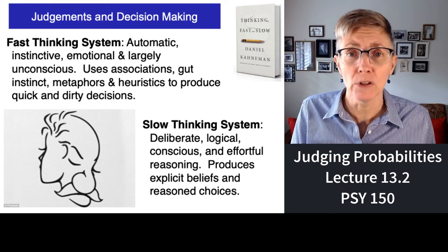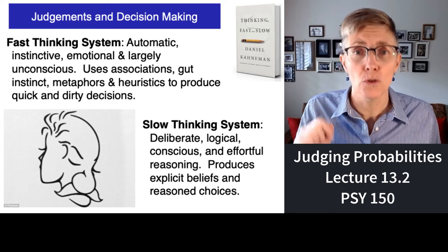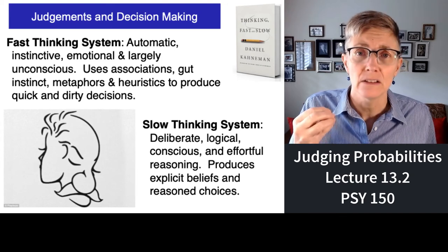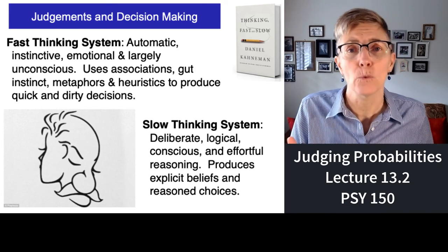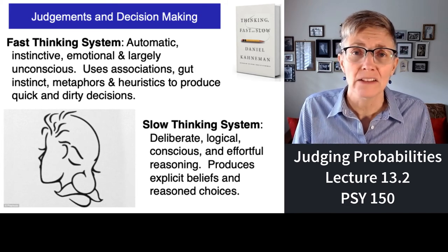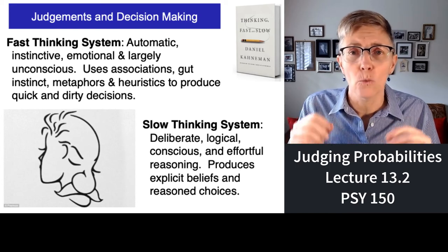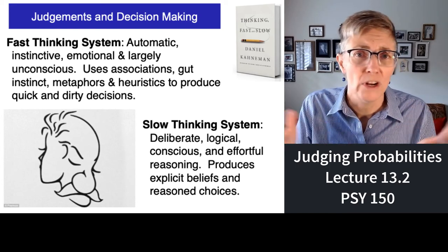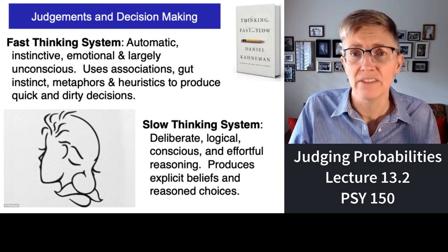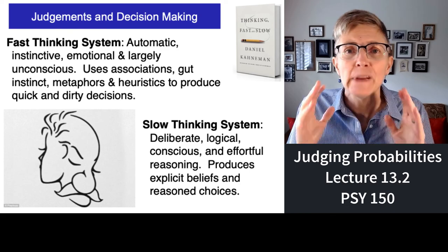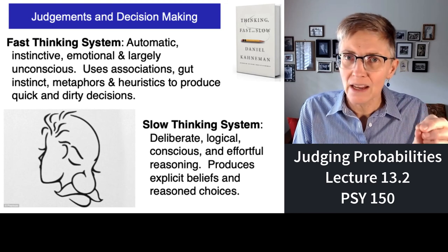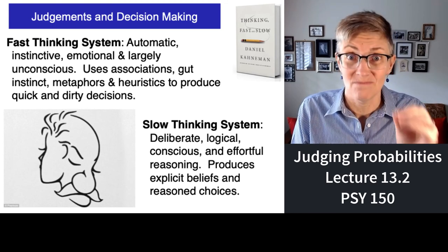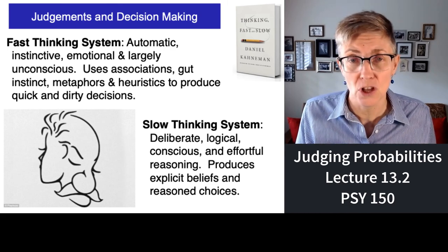We're also quite capable of making decisions using the slow thinking system — deliberate, logical, and effortful choices. If you want to find out the odds it will rain tomorrow, you might go online and find historical data on whether it rains in Los Angeles on October 7th every year. It would be like a Spock sort of answer. So you can find the precise answer, or you can give a quick and dirty guesstimate — that's the difference between the slow and the fast system. Come right back and we'll talk all about heuristics.